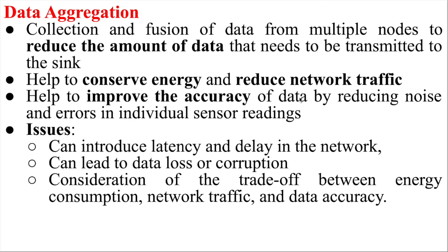Another reason aggregation improves accuracy is the aggregation decision. If you have three nodes and decide to transmit only two nodes' data — say one sensor reads 40 degrees temperature and the other two read 21 and 22 degrees — you can select the best two sensor readings and transmit them. That is data aggregation. Choosing the best two data points improves accuracy because the 40-degree sensor may be faulty. If the majority says 21 or 22 degrees, then 21–22 is the better value. So aggregation not only reduces energy but also helps improve accuracy.